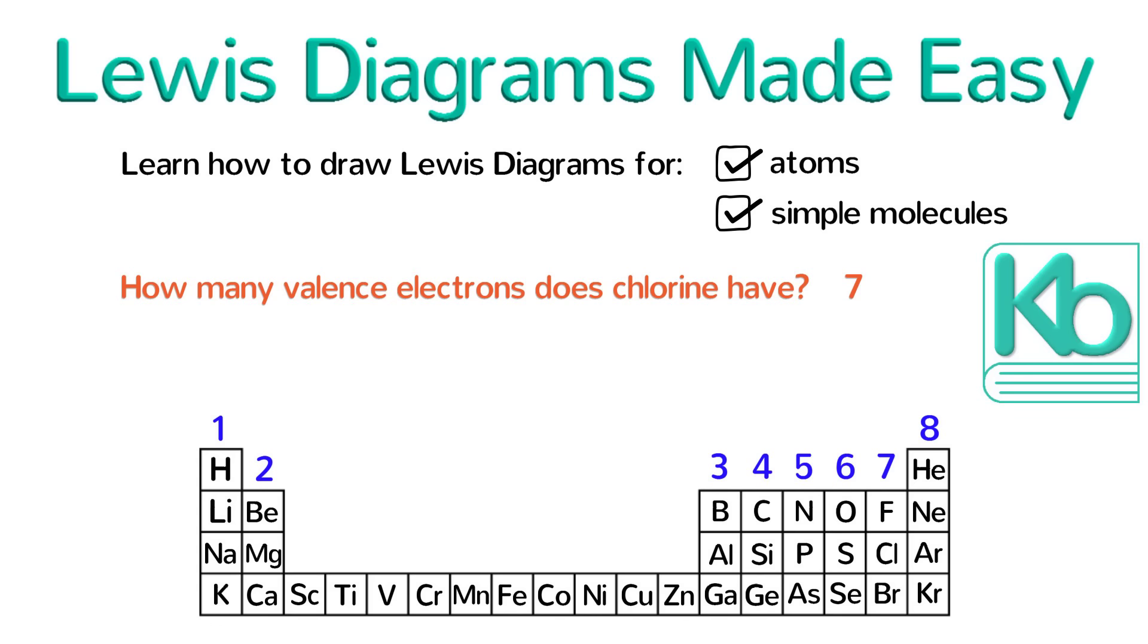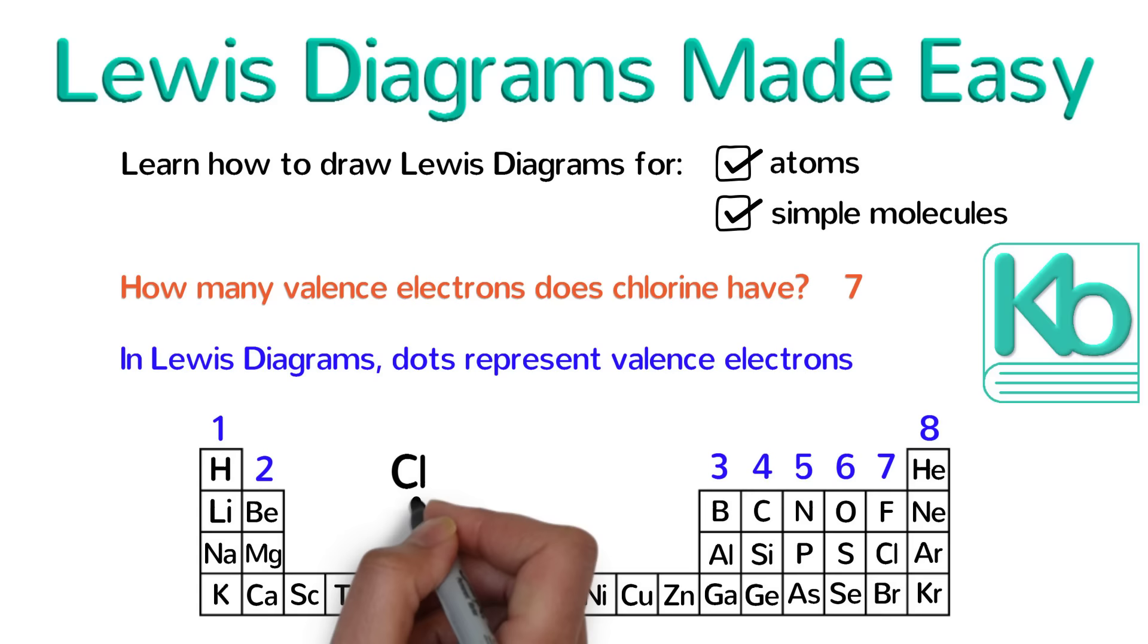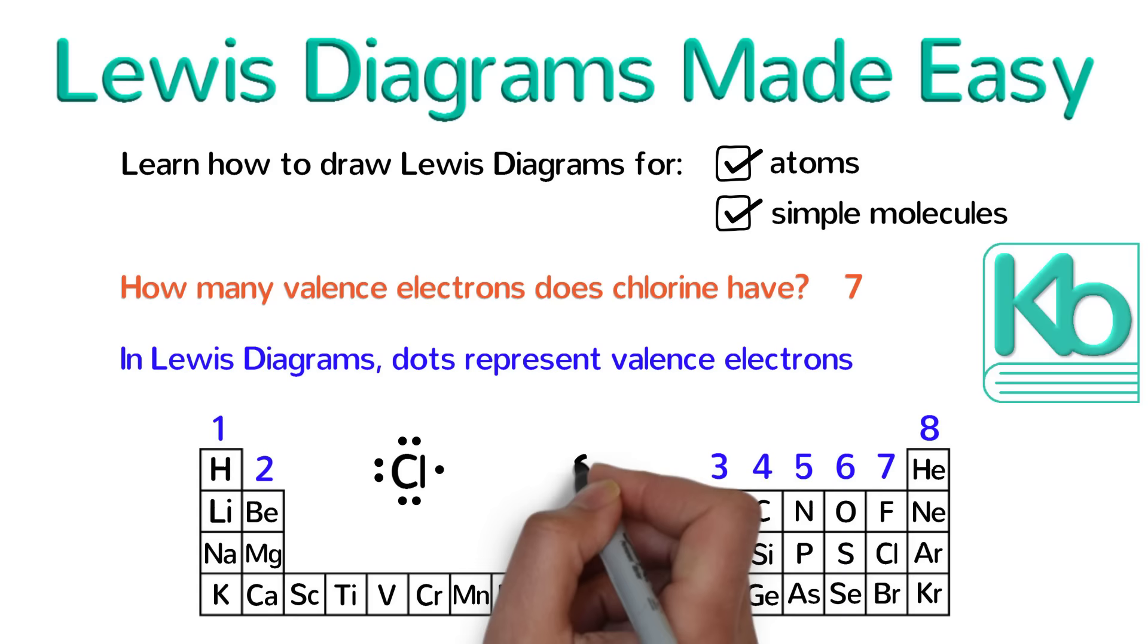Knowing the number of valence electrons an element has is critical, and in Lewis diagrams, we use dots to represent valence electrons. So, the Lewis diagram of chlorine is the symbol Cl with seven dots around it. When you draw the dots, don't just put them anywhere. Instead, imagine a square around the element symbol. The dots should be neatly drawn on the four sides of the square with no more than two dots on any side.